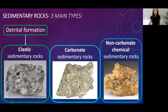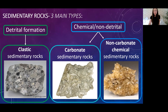Clastic rocks form from detrital formation — loose sediment from weathering and erosion of previous rocks — that gets lithified into new rocks. However, carbonates and non-carbonate chemical rocks are chemical sedimentary rocks, meaning they're non-detrital. They form from precipitation or from accumulation of carbonate material from organisms.